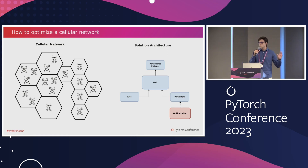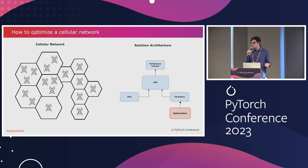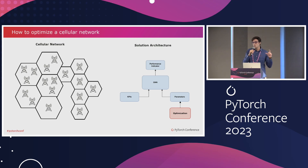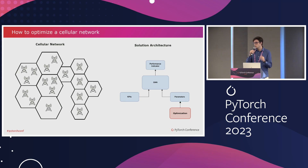Each cell of the cellular network has certain parameters that you can modify for changing the behavior of the cell, and those are the parameters we are going to use for trying to optimize the network. One thing we have to take into account is that if we modify those parameters, we are going to affect our neighbor cell — only the one-hop neighbor cell — but if we change the parameters, we change the behavior of our cell and the neighbor.